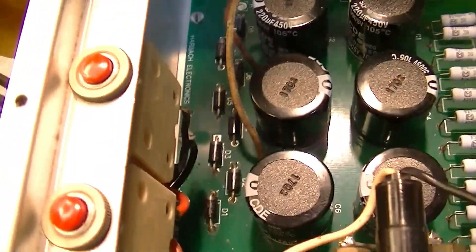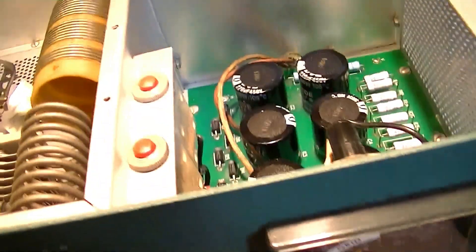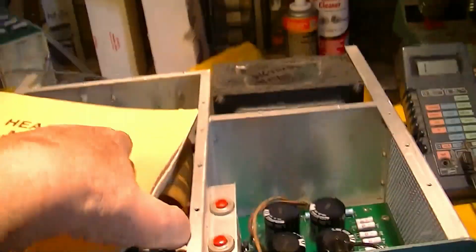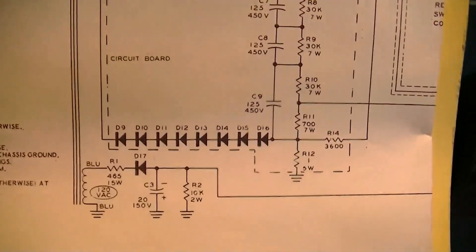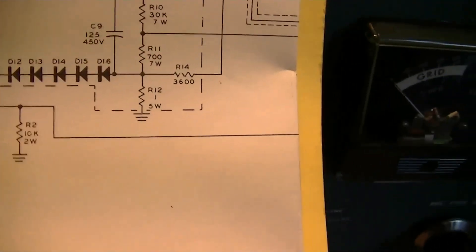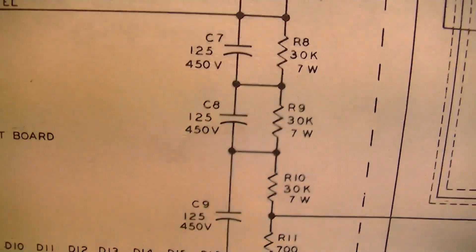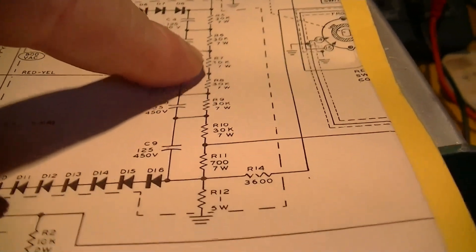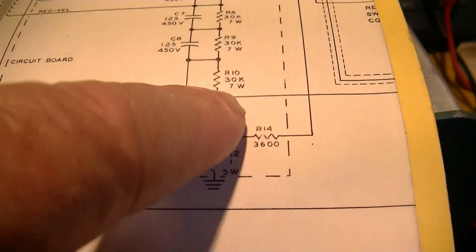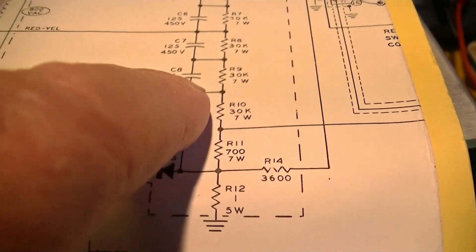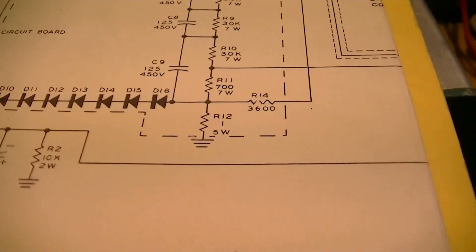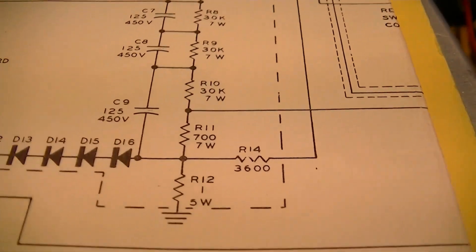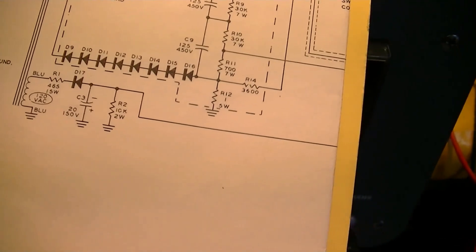Now I've got to check the Harbach schematic against the Heathkit schematic because they do things a little bit differently. If you look in here at this schematic you'll find R9 right there which is part of this string of bleeder resistors. According to this it's just a bleeder across C8, but I don't think that's true. That says it's a 30k resistor so that's not what R9 is.